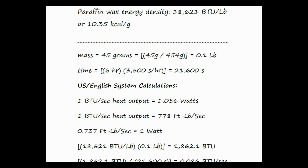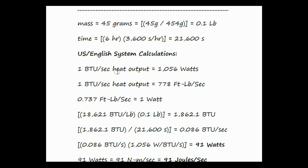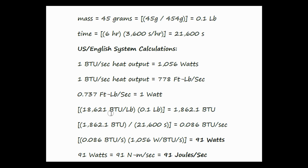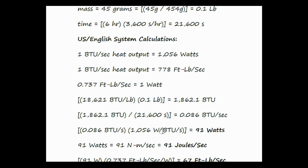Starting with the U.S. English system calculations: 1 BTU per second heat output is equal to 1,056 watts of power and 778 foot-pounds per second mechanical power. 0.737 foot-pounds per second mechanical power is equal to 1 watt. 18,621 BTUs per pound times 0.1 pounds gives a potential energy of 1,862.1 BTUs. Dividing by 21,600 seconds burn time equals 0.086 BTUs per second, multiplied by 1,056 watts per BTU per second, gives 91 watts of power output by the candle's flame.